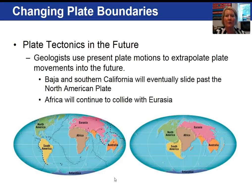Geologists can use plate motions today to extrapolate movements of the future. For example, Baja and Southern California will eventually slide past the North American plate, and Africa will continue to collide with Eurasia, continuing to build the Alps.